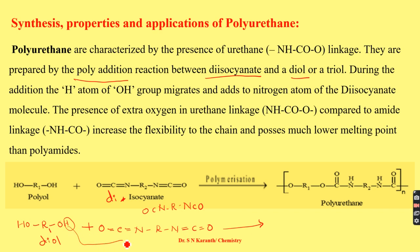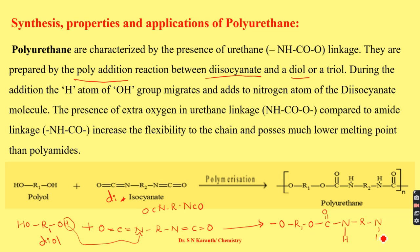The hydrogen from the diol migrates and links to the nitrogen atom of the diisocyanate. The nitrogen-carbon bond splits, and the hydrogen from the alcoholic group attaches to the nitrogen atom. The next alcoholic molecule then links in, continuing the chain. The resulting molecule is called polyurethane, characterized by the urethane linkage NHCO.